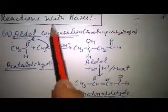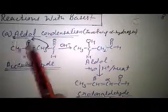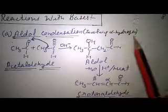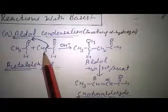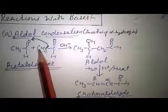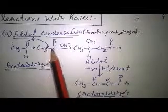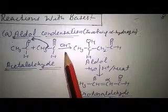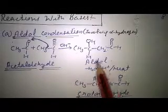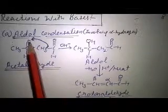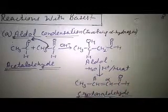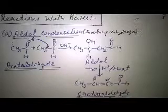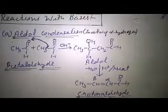Students, the further reaction is the reaction of aldehyde and ketone with a base. The first reaction is aldol condensation, which involves alpha hydrogen. In this, acetaldehyde plus acetaldehyde — both aldehydes have alpha hydrogen, which is the hydrogen attached to the carbon adjacent to the carbonyl group. When reacted with the base, it changes into an aldol in which one hydrogen is attached. Aldol is formed, and on further heating in the presence of H+ ions, the unsaturated aldehyde crotonaldehyde is formed.